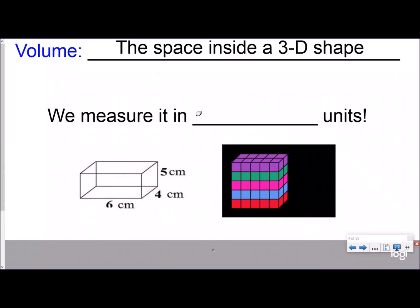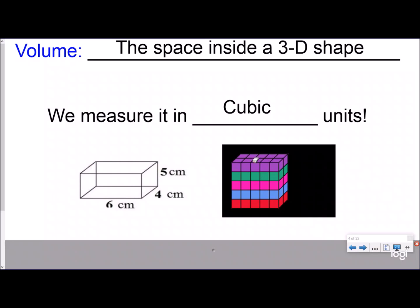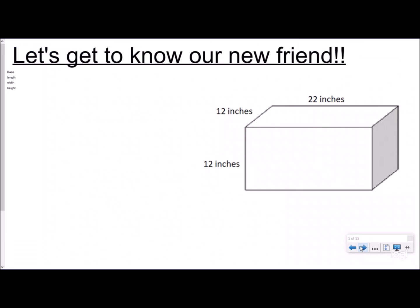Instead of measuring with square units, the 3D version of a square is a cube, so we measure in cubic units. We talk about these two pictures — how you're trying to fill an empty box with cubes, which represents the volume — or sometimes pictures clearly show the cubes already.